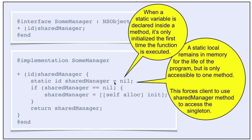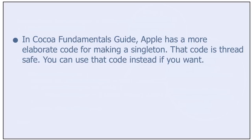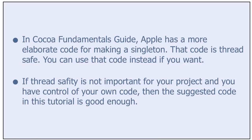Regarding the initialization to nil: when a static variable is declared inside a method, it is only initialized the first time the function is executed. In the Cocoa Fundamentals guide, Apple has a more elaborate, thread-safe code for making a singleton. You can use that code instead if you want. But if thread-safety is not important for your project and you have control of your own code, then the suggested code in this tutorial is good enough.